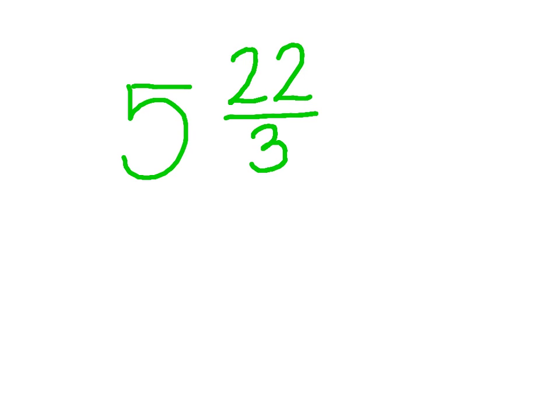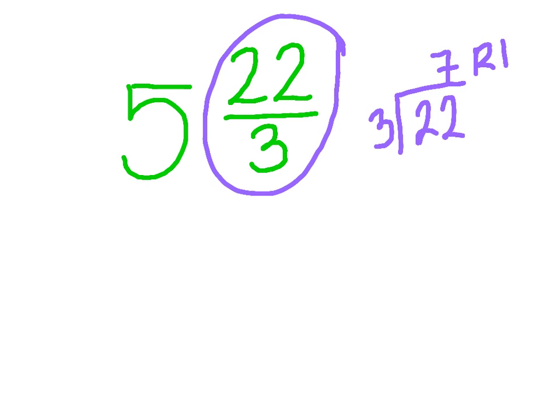I can do this by dividing 22 by 3, and I know that 3 goes into 22 seven times. And I know that there's going to be a remainder of 1. So my mixed number with the improper fraction of 22 thirds is going to be 7 and 1 third.